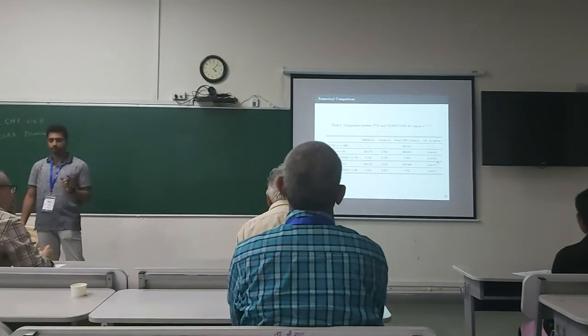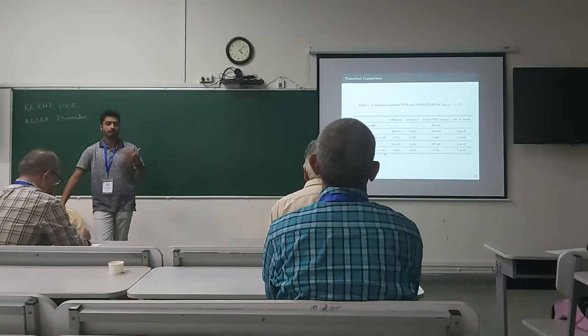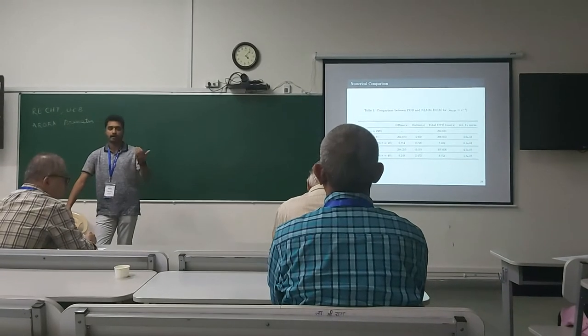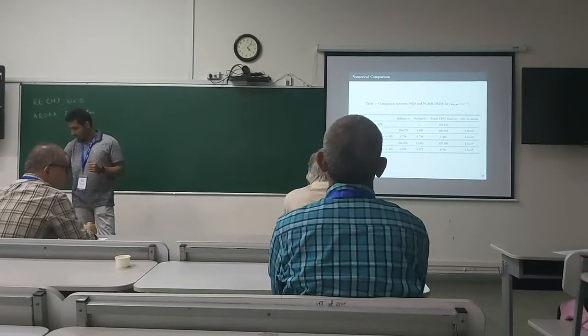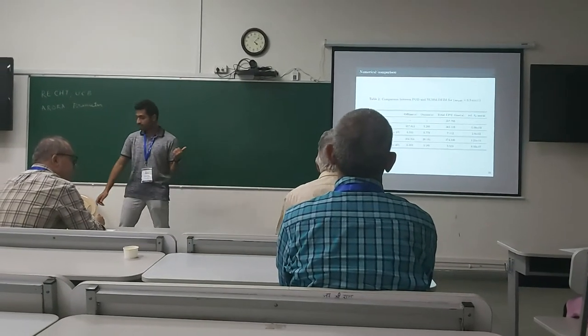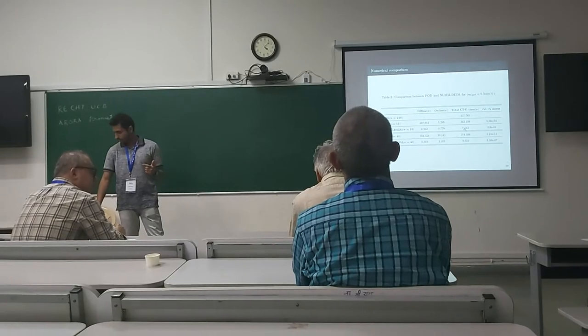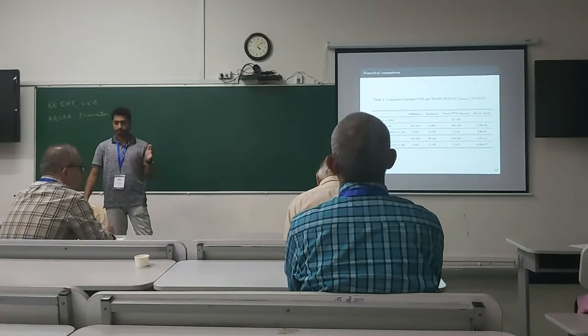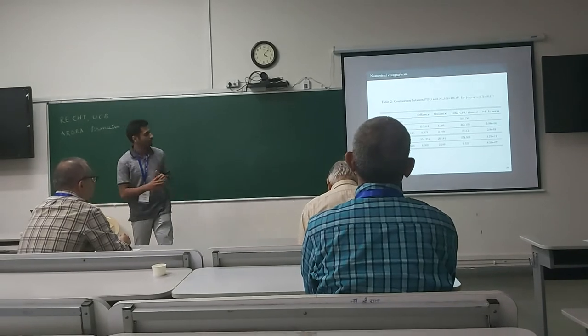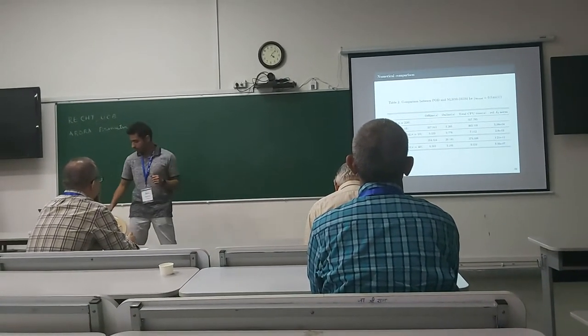And this is for order 10. If we go for more order it will take more time, error will be less. And this is the table for sinusoidal inputs. Again we can see the savings in time simulating the 1D Burger's equation. And we can take more higher order. This is for 10 and this is for 40. So the overall CPU time has reduced quite a lot.